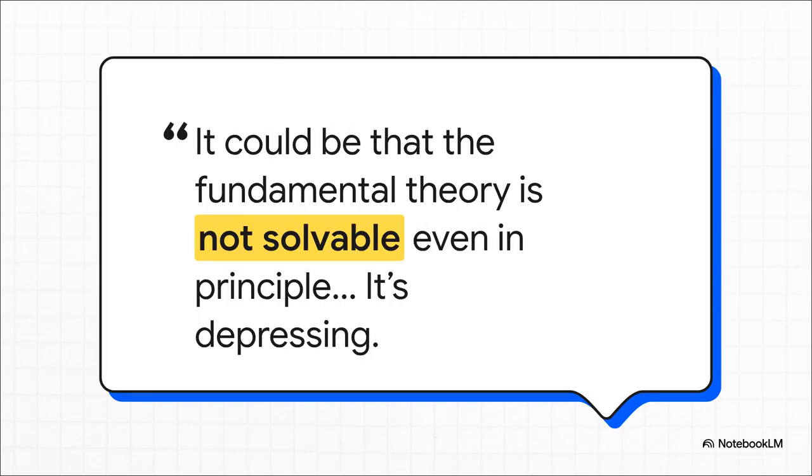And this whole line of thinking has some really profound, even unsettling, implications for scientists themselves. The physicist Lawrence Krauss basically admits that it's possible a final theory isn't just hard to find, but that it might be unsolvable, even in principle. He says it's depressing, and you can kind of see why. It's a truly humbling thought.